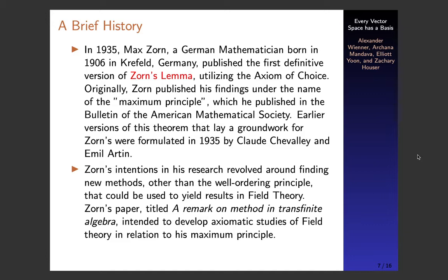Earlier versions of the theorem that laid groundwork for his lemma were formulated in 1935 by Claude Schumali and Emil Martin. Zorn was aiming to find methods other than using the well-ordering principle that could be used to yield results in field theory. His paper was titled 'A Remark on Method in Transfinite Algebra,' and its main intention was to develop axiomatic studies in field theory in relation to his maximum principle, as opposed to using the well-ordering principle.